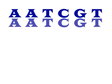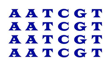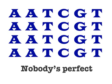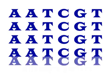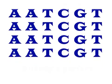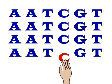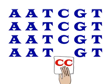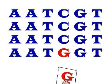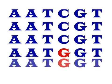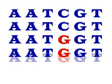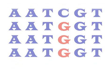When the body makes new cells, it doesn't make many mistakes. But nobody's perfect. Sometimes, when the genome is copied to make a new cell, a single base pair gets left out, added, or substituted. Single base pair substitutions create SNPs.